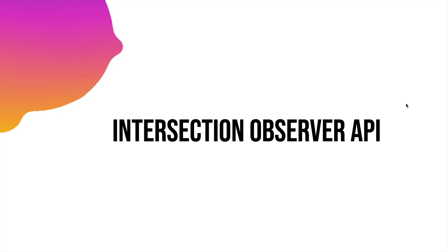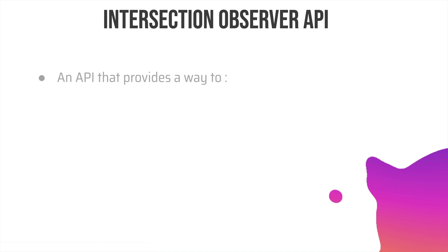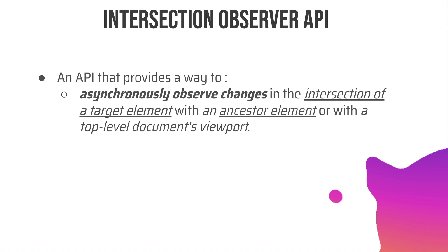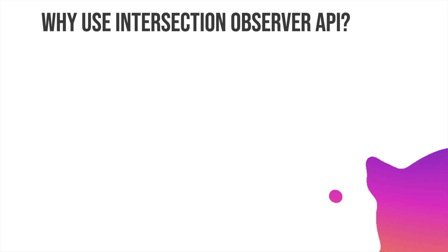So let's talk about the Intersection Observer API. It's an API that provides a way to asynchronously observe changes in the intersection of a target element within an ancestor element or with the top-level document's viewport. Basically its job is to observe changes whenever that particular target element comes into view or intersects with that ancestor element.